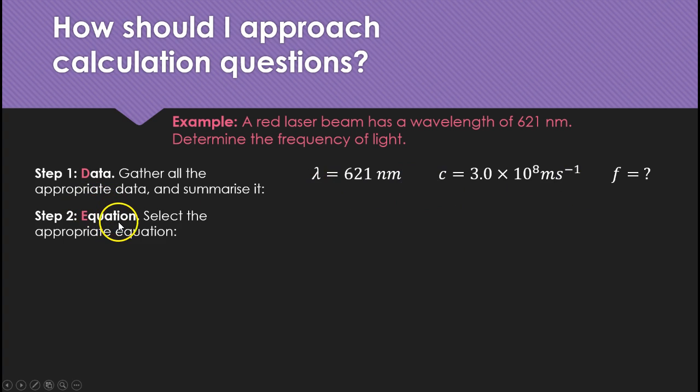Step two is the equation. Find the appropriate equation from a data sheet or sometimes for some courses you need to know them. Here I need speed. Wave speed is frequency times wavelength.